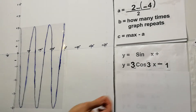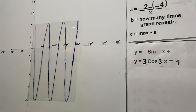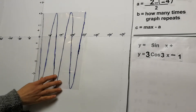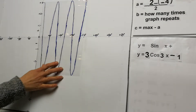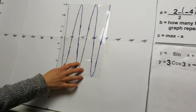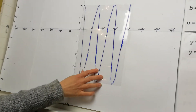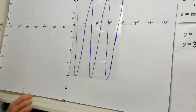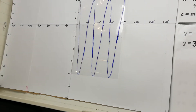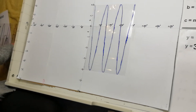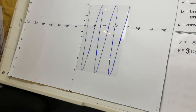Another way to think about that is the graph would have started up higher but it's been moved down by 1, hence the negative 1. So the equation is y = 3cos(3x) − 1.